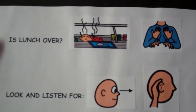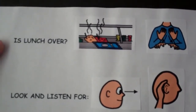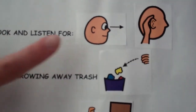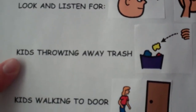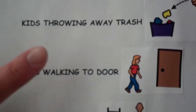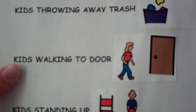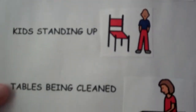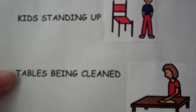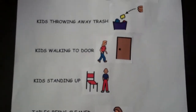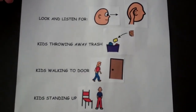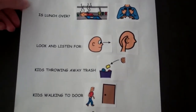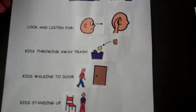When in the cafeteria, he is taught to look and listen for: kids throwing away the trash, kids walking to the door, kids standing up or tables being cleaned. These cues should help him realize that lunch is soon ending and that he must finish up and get to his next class.